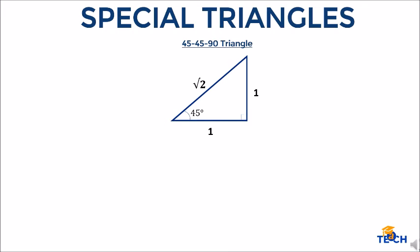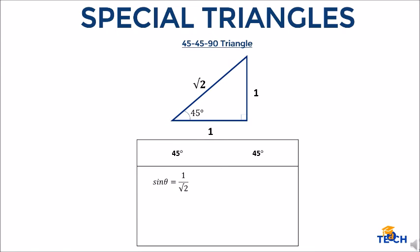Let's determine the trigonometric functions for this triangle. For sine theta, opposite over hypotenuse gives us 1 over square root of 2. For cosine theta, adjacent over hypotenuse is also 1 over square root of 2, since the adjacent side is also 1. For tangent theta, opposite over adjacent gives us 1 over 1, or simply 1.